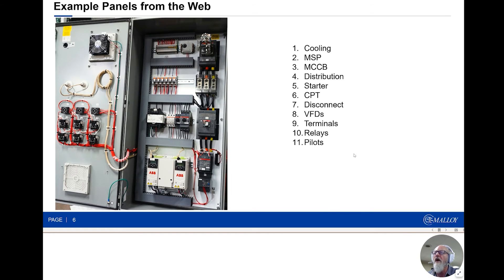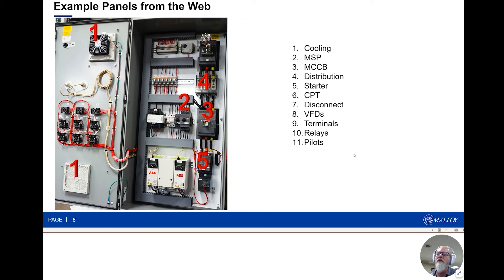The last example is a bit different. We're looking at cooling on the door — it includes the door, top and bottom. The motor starter protectors are again used here to protect the drives. This design has two drives and one starter, so there are three sets of pilot lights. You have a molded-case circuit breaker, a distribution block, a contactor, and a starter — presumably because they needed two VFDs to control speed and a third motor that didn't require variable speed or soft starting. Then there's a control power transformer, an isolating disconnect, the drives, terminals, relays, and of course the pilot lights.